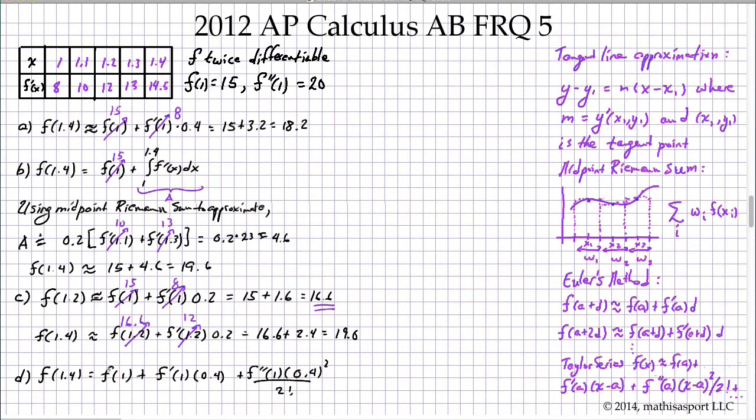Let's see if we can figure out these numbers. f of 1 again is 15, f prime of 1 we said is 8, f double prime of 1 is given as 20. So let's continue part D up here.